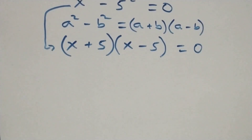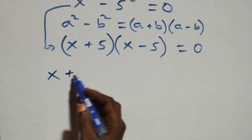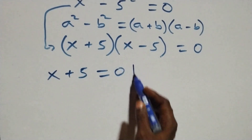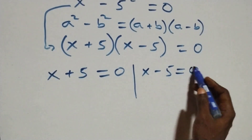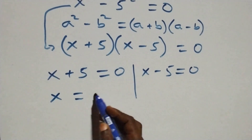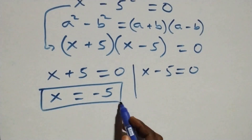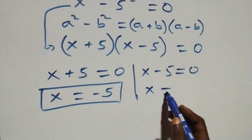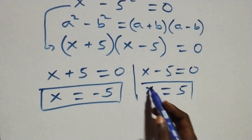We have two possible cases: x plus 5 equals 0 or x minus 5 equals 0. This gives x equals minus 5, which is a real solution, and x equals 5, which is also a real solution.